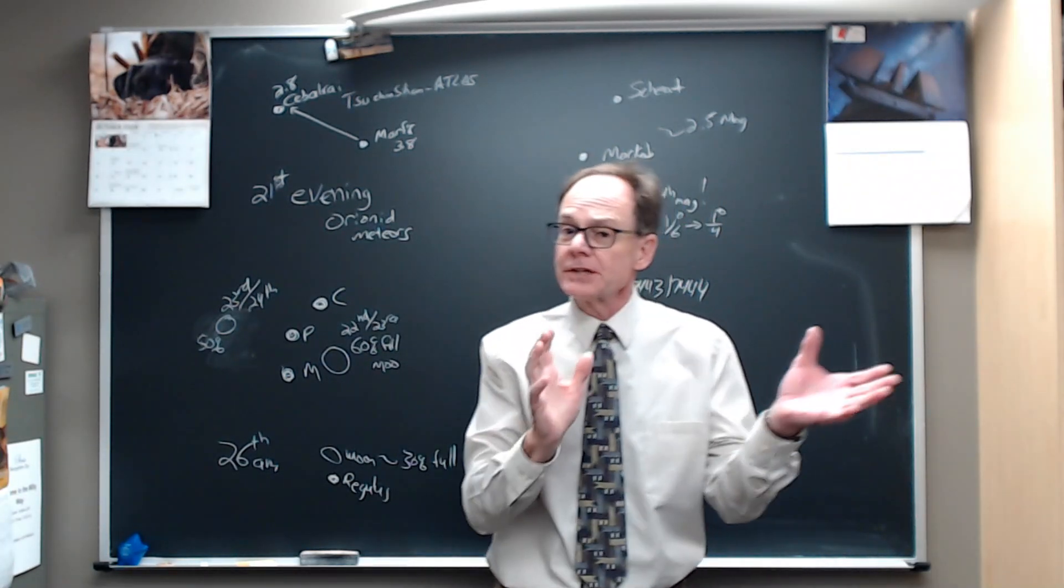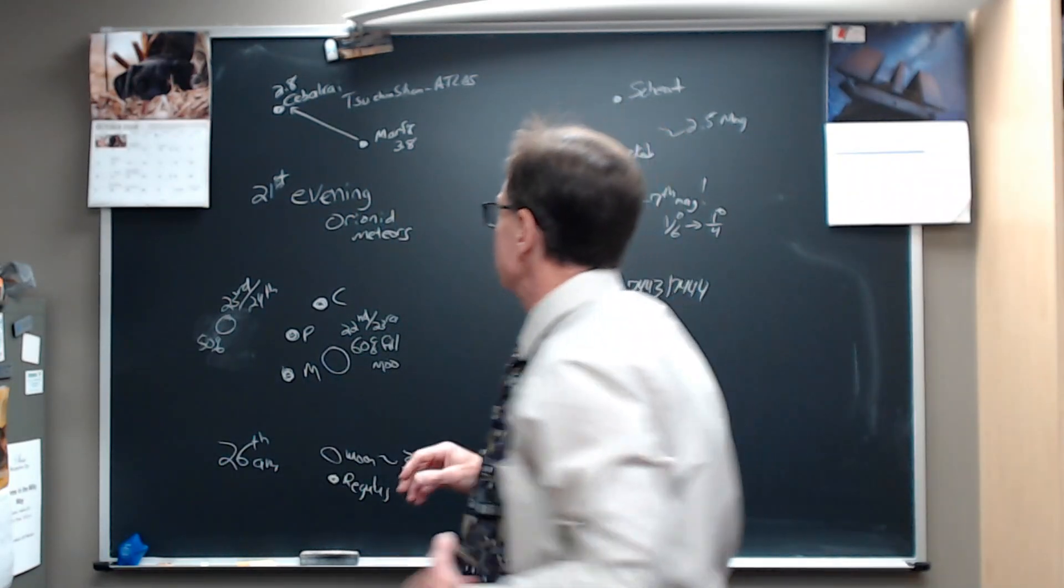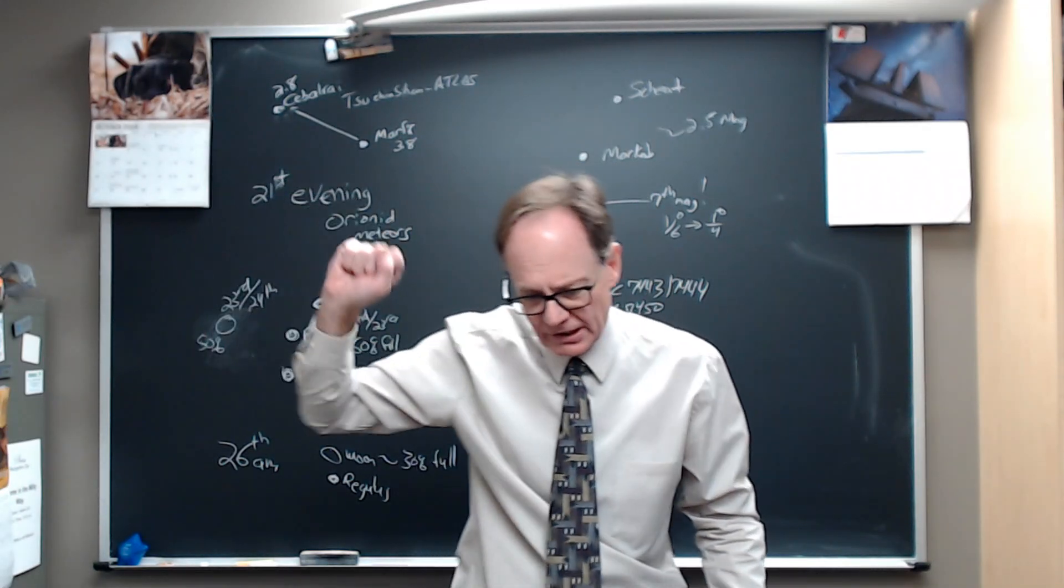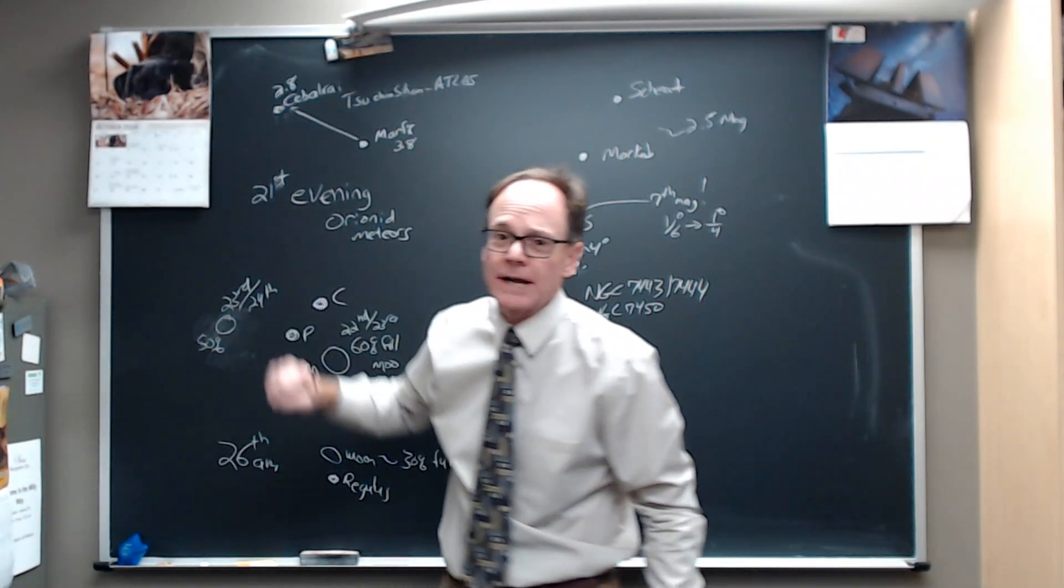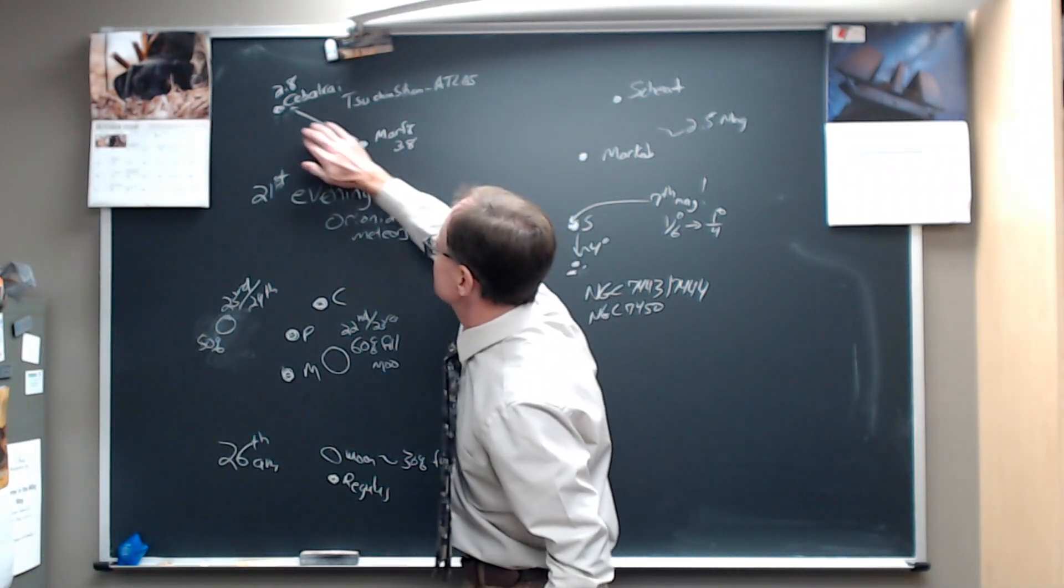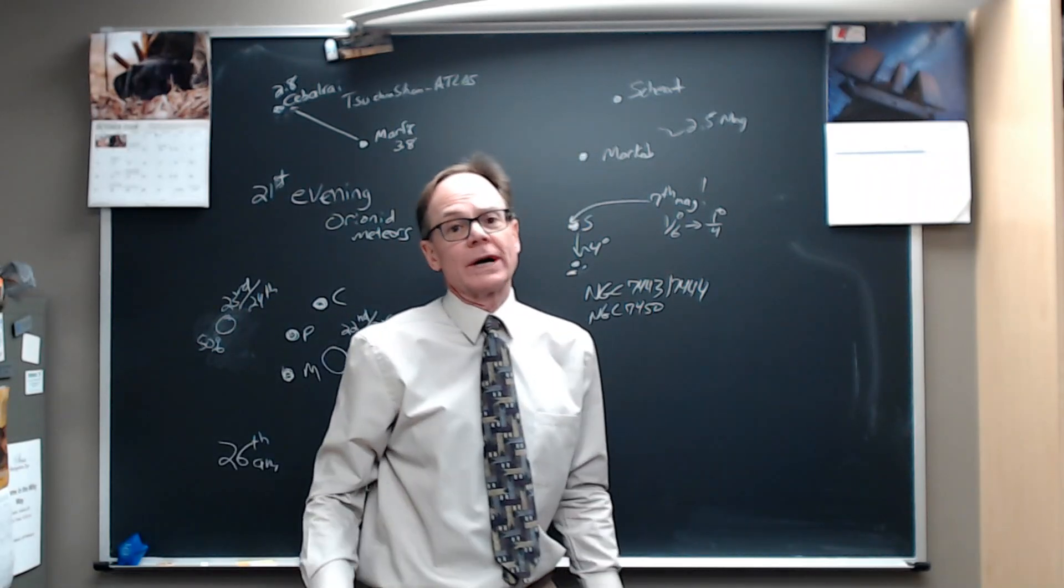And what it's going to do in the week ahead is it's going to traverse Ophiuchus and get over near the bright star Beta Ophiuchus. Sebalrai is this star. It's a third magnitude star, 2.8 magnitude star, pretty bright. So watch it move from Marfic to Sebalrai up this direction as the week wears on.